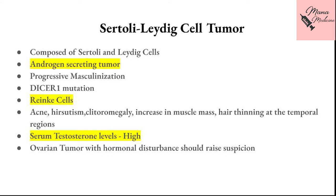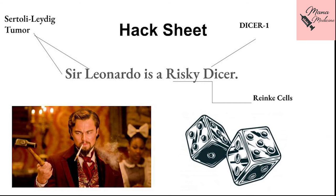To remember the features of Sertoli-Leydig cell tumor, here is the mnemonic: 'Sir Leonardo is a risky DICER' — a dicer being one who plays with dice. 'Sir Leonardo' represents Sertoli-Leydig cells; 'risky' because it has Reinke crystals; and 'DICER' because it is associated with DICER1 mutations. I used the character Sir Leonardo because male hormones are being produced, just as I used 'Granny' for granulosa cell tumor because female hormones are being produced — I hope that makes sense.